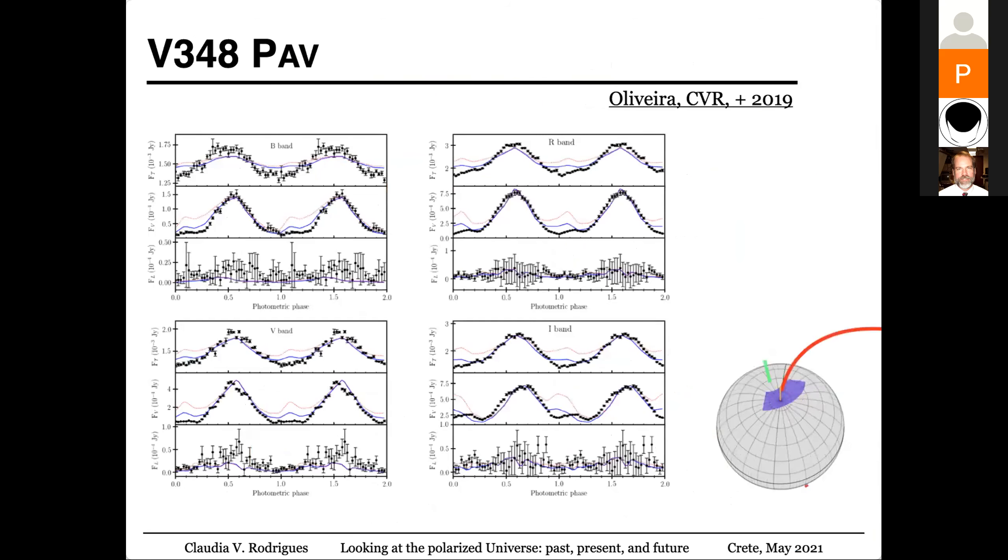And here I show you a fitting that we have done for another object. This is an already published result. So you can see the kind of data we can obtain with the IAG polarimeter in our observatory. Here we have four bands, B, R, V, and I. You can see how the flux varies and the circular polarization varies.